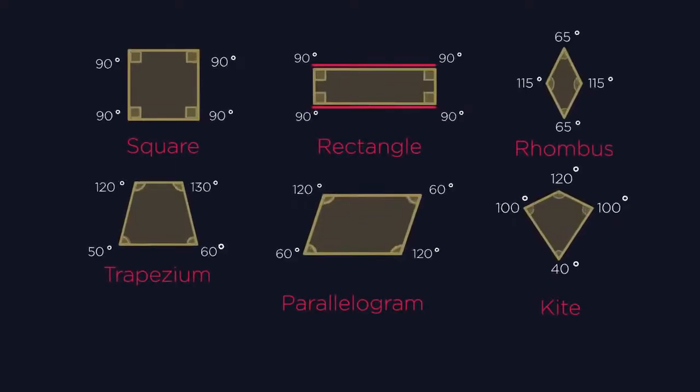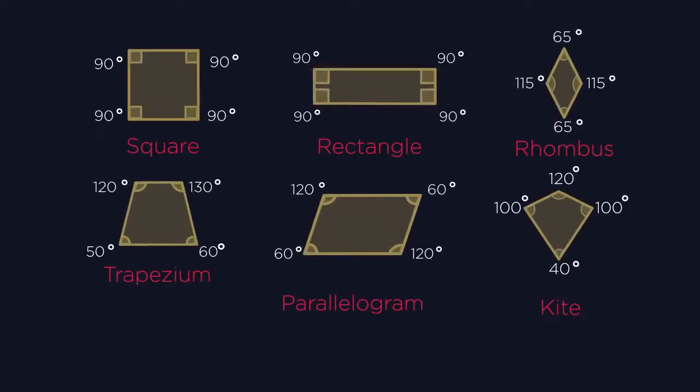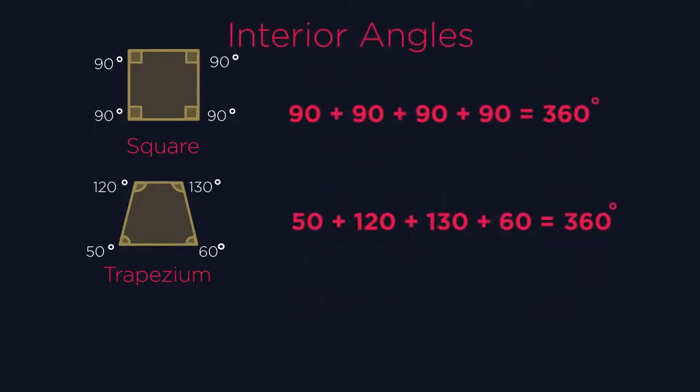So they all have four sides, they all have four angles, they all have four vertices or corners. What about the sum of the interior angles? The interior angles always add up to 360 degrees.